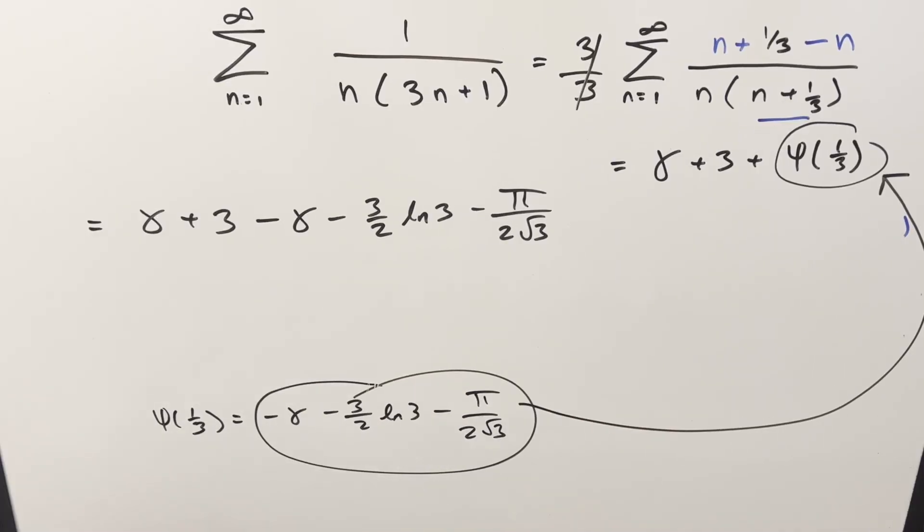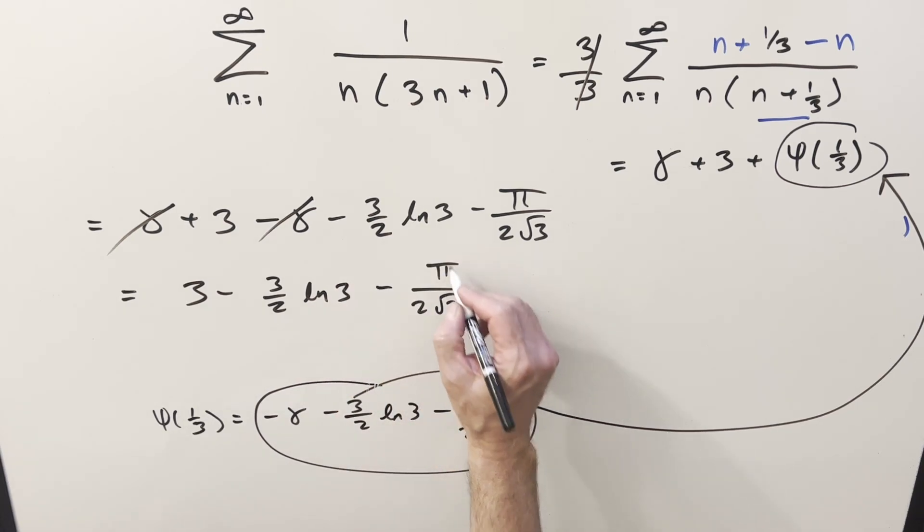Okay, now that we've got our digamma 1 thirds, plug back in. We just need a little simplification. First, the Euler-Mascheroni constants are going to cancel and give us a 0 there. And then we just need to sum it up. So for my final solution, we just get 3 minus 3 halves ln 3 minus pi over 2 square root of 3. And that's it.